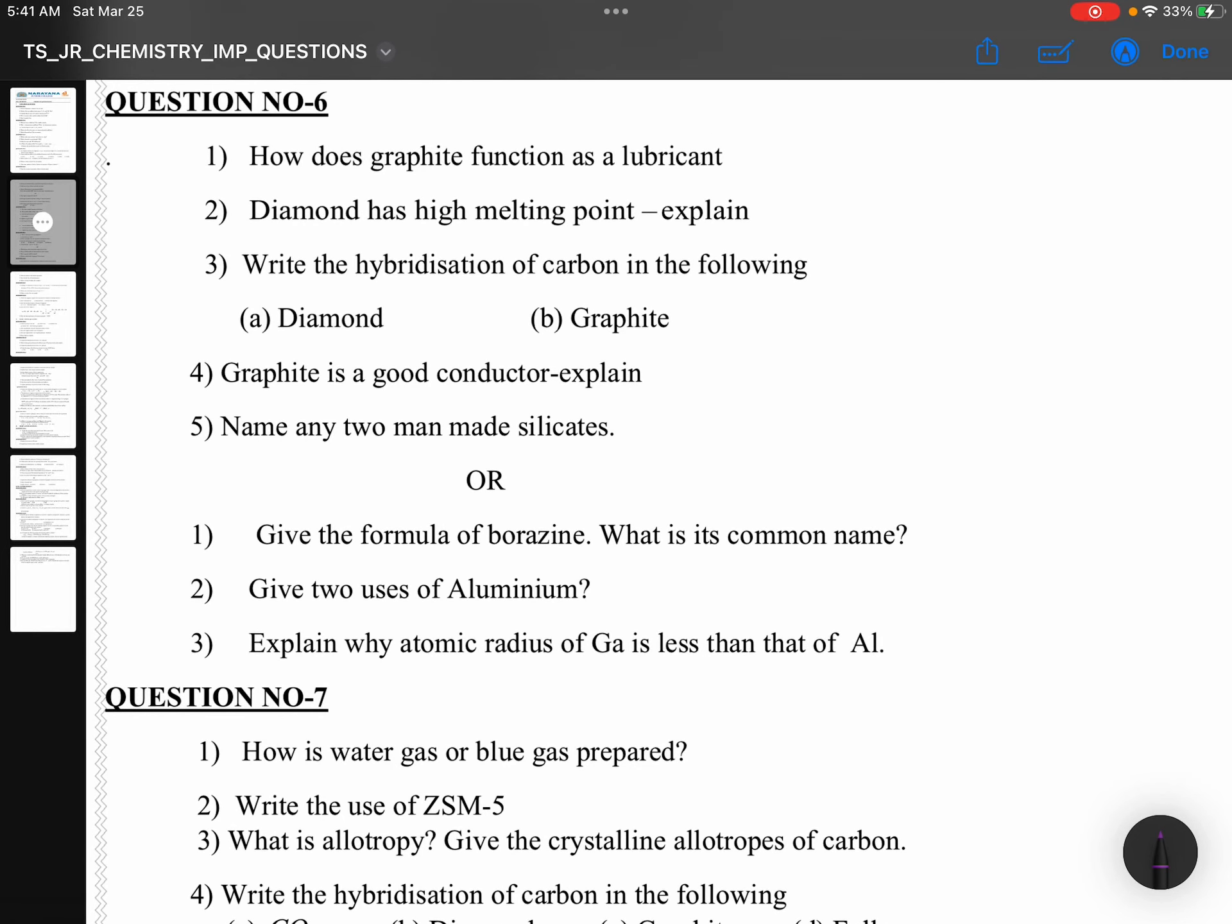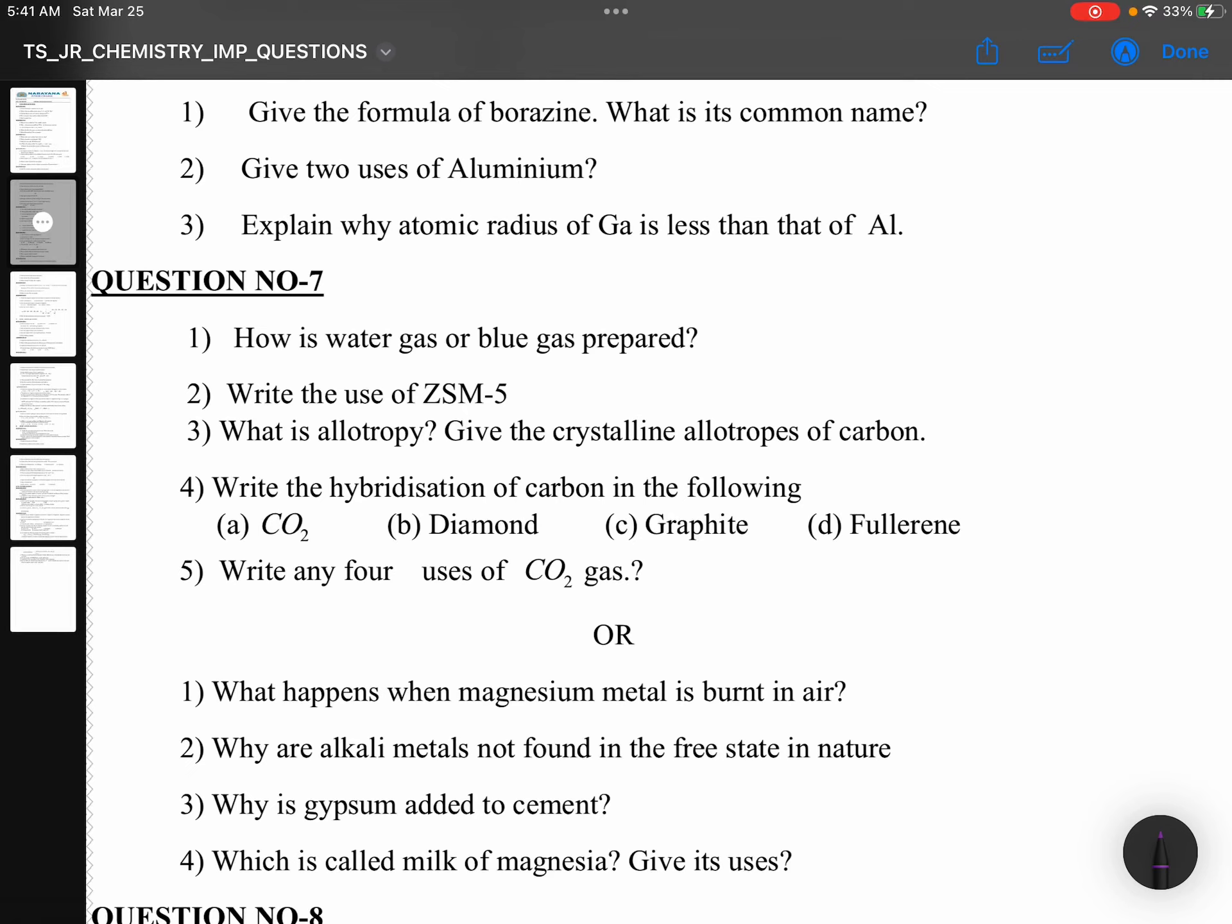Question number 6: P block, graphite question or diamond question, diamond graphite hybridization. Why graphite is a good conductor? Silicates. Otherwise, if they are taking from group 13, then Borazine formula, aluminum uses. Atomic radius of gallium is less than that of aluminum. Reason for that. So, P block question.